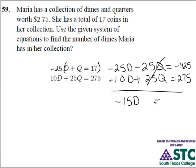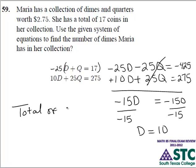Negative 15D equals negative 150, since that's the difference between negative 425 and 275. We would then proceed to solve for the number of dimes that are in Maria's collection. So we would divide both sides by negative 15 and we obtain our value D equals 10. So Maria has a total of 10 dimes in her collection.